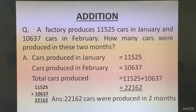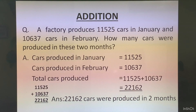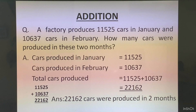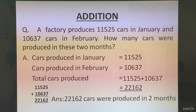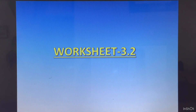I hope you are clear with the way you are supposed to write. Notice how numbers are written one below the other, calculation is done in the fair, and you write the answer in one proper sentence reporting how many cars with units. Here we are talking about cars, so I wrote 22162 cars. Now we will do a worksheet to enhance our understanding — Worksheet 3.2.